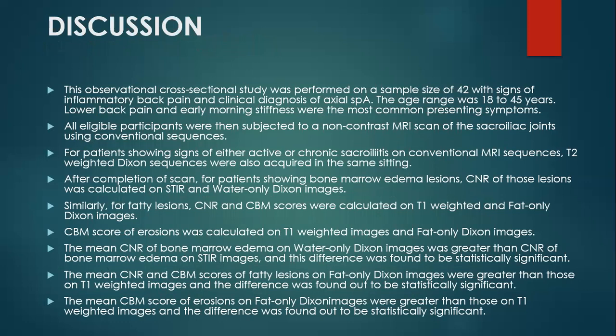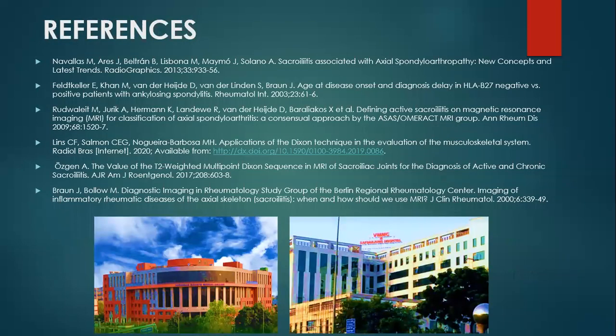My study was an observational cross-sectional study on a sample size of 42 patients with signs of inflammatory back pain. The age range was 18 to 45 years, and lower backache and early morning stiffness were the most common symptoms. Patients were subjected to a non-contrast MRI scan of the sacroiliac joints first, and for those who showed signs of either active or chronic sacroiliitis pertaining to axial spondyloarthropathy, T2-weighted multipoint Dixon was then used. We calculated the CNR and Berlin scores and compared them. The mean CNR of bone marrow edema and fatty regions on Dixon sequences was higher than on conventional sequences, and the same was true for Berlin scores. Thank you very much.